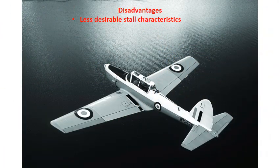Some of the disadvantages of the tapered wing: it's going to have less desirable stall characteristics. A straight rectangular wing is going to stall at the wing root first and give you a bit of a warning, and you'll still have good aileron control. Once you start adding a trailing edge taper especially, the wing is going to start to stall more along the whole surface at one time, giving less warning before the stall and making it a little less controllable. They're also a little more complicated to build, though still fairly simple.